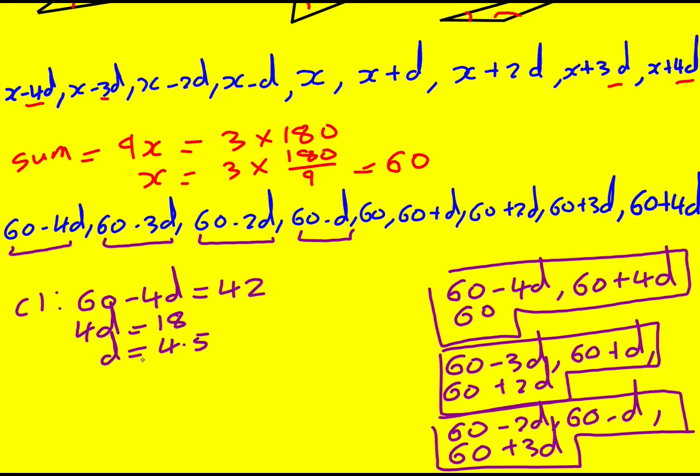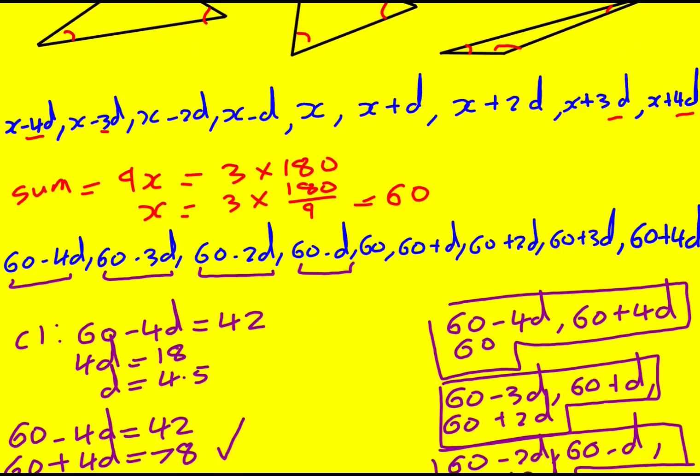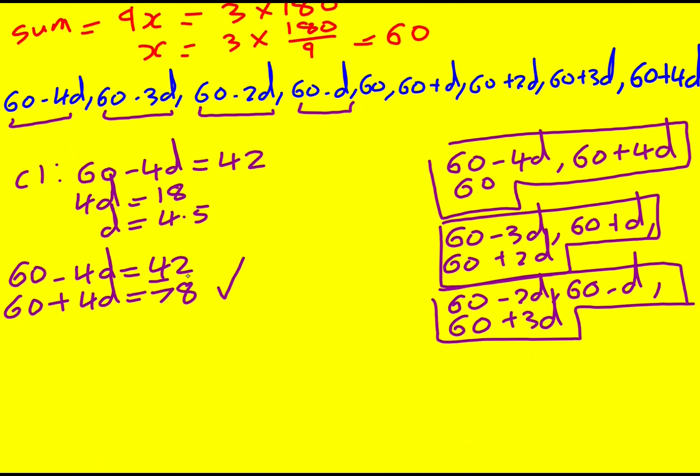What happens when we put d equals 4.5 in? Then 60 minus 4d is going to be 42 that we constructed. And 60 plus 4d is going to be 60 plus 18, so 78. So this is all good, and it's going to be a possible answer. So the largest of the nine angles in this case is 78.